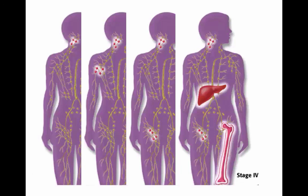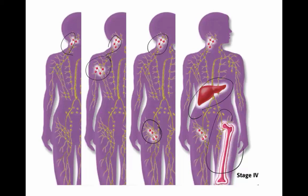This slide shows the different stages: stage one, stage two, stage three with both sides of the diaphragm, and stage four with organ involvement — in this case, liver and bone.